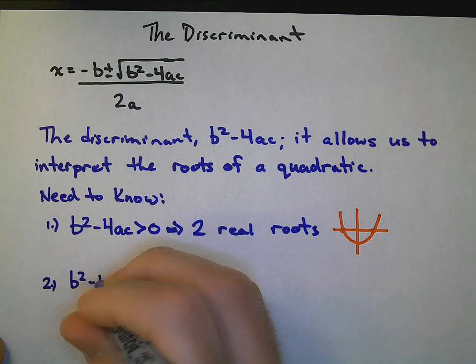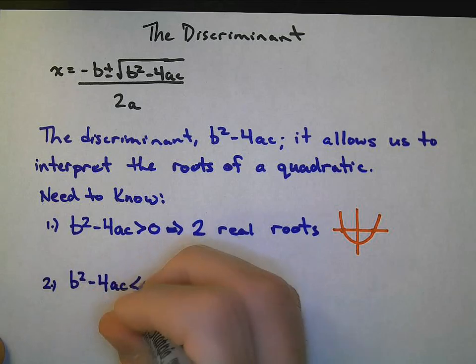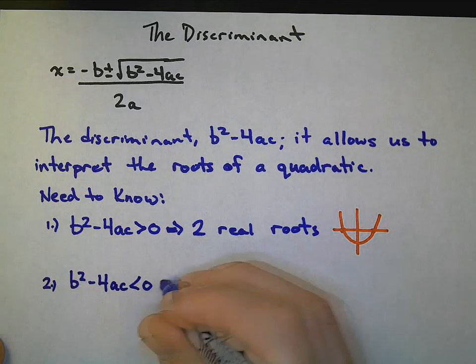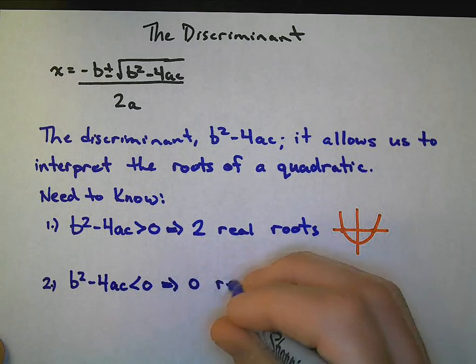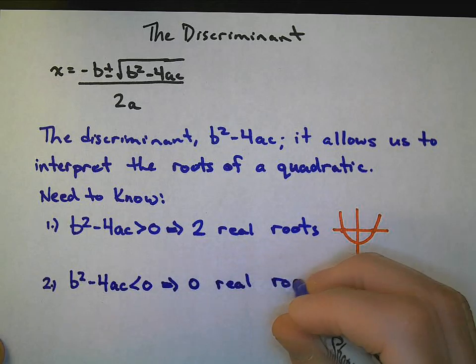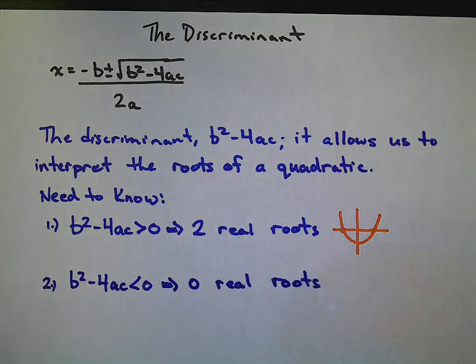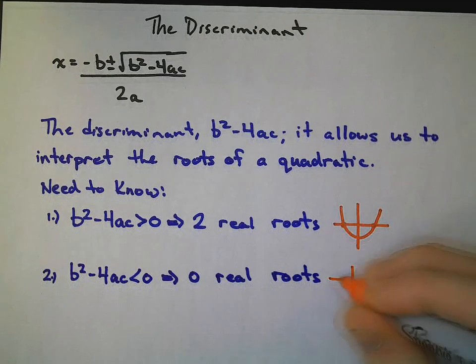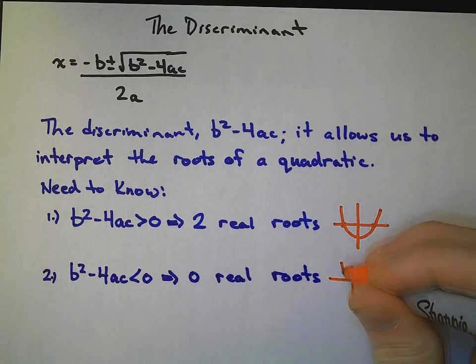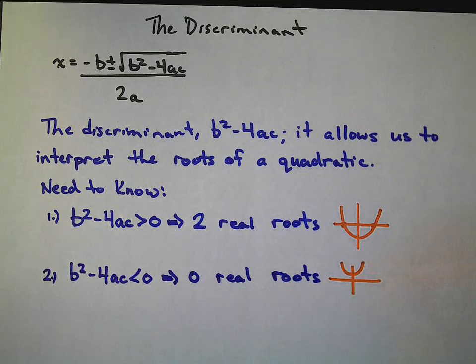If b squared minus 4ac is less than 0, what does that mean? That tells us there are 0 or no real roots. And the way to think about that is if we have our Cartesian plane set up yet again, it is opening in the upwards direction, never crosses the x-axis, no x-intercepts.